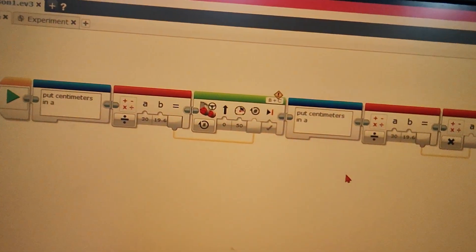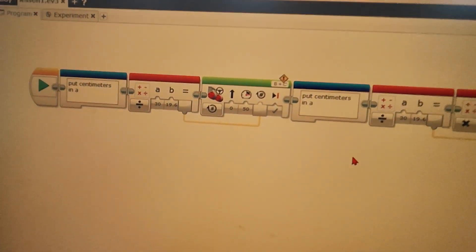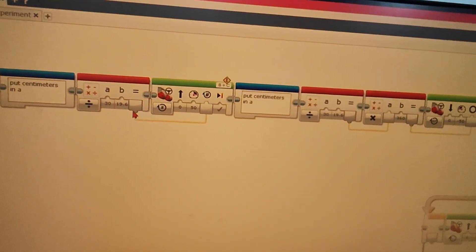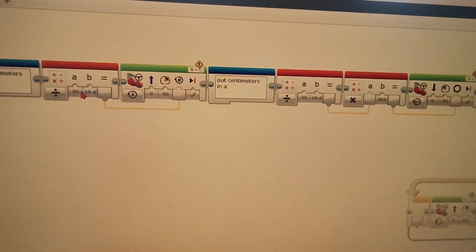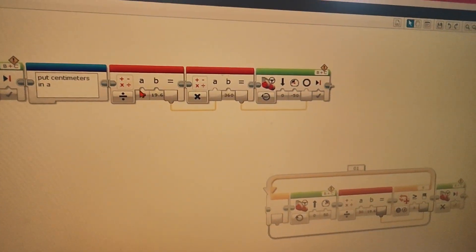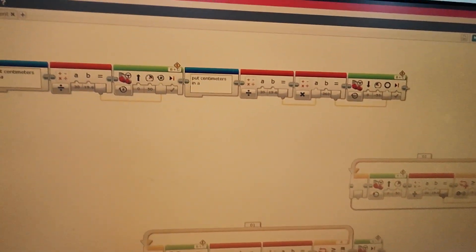And now, let's test the code in EV3G, or EV3 Lab software, as people call it. So, this code will move forward for 30 centimeters using rotations to count, and then move backwards for 30 centimeters using degrees to count. Let's run the code.